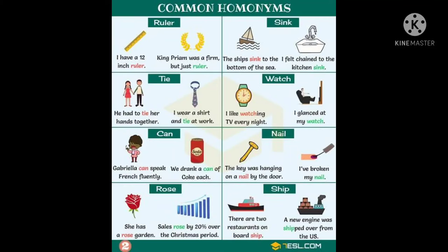We have rose. She has a rose garden. Sales rose by 20% over the Christmas period. So in the first sentence it refers to the name of a flower, and in the second sentence it is acting as an action — rose is the past tense of rise.